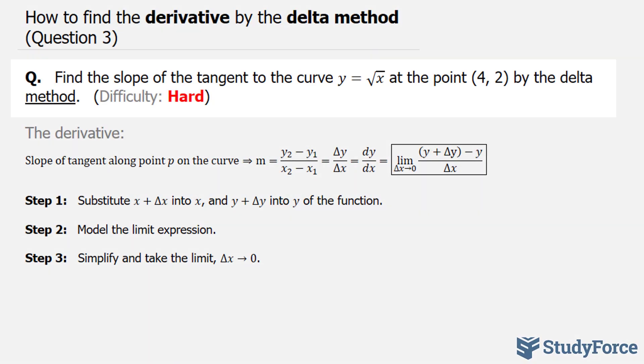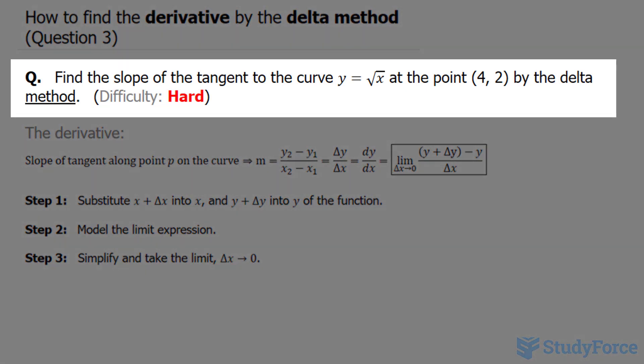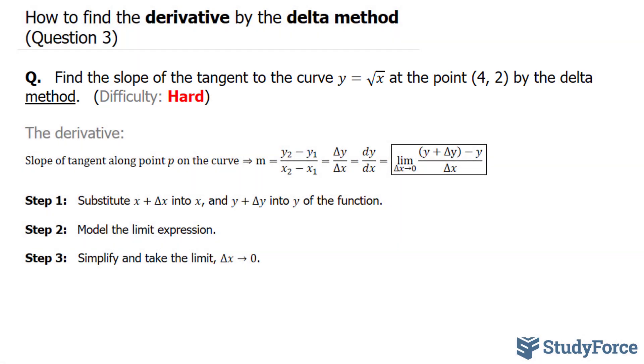In question 3 of this series, we're asked to find the slope of the tangent to the curve y equals the square root of x at the point (4, 2) by the delta method. Let's follow these steps.